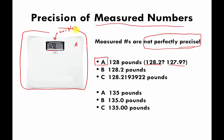What Scale A is basically saying is: I know you weigh more than 127 and less than 129, so I'll call it 128 — but where exactly you are relative to 128, I'm not sure. You could have a more precise scale, Scale B, which says I weigh 128.2 pounds. But even Scale B is not perfectly precise — it's saying I know you weigh more than 128.1 and less than 128.3.